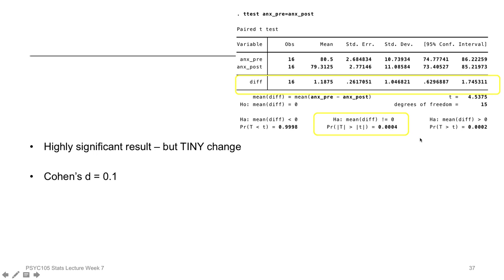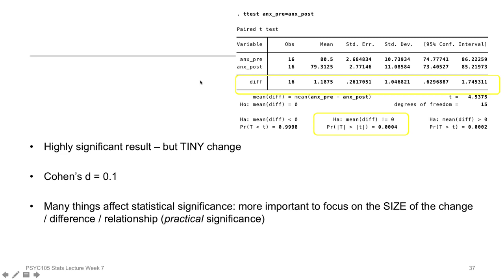If we only looked at the statistically significant result, we might get excited thinking this therapy is very useful — but it's actually not particularly useful because it has such a tiny effect on anxiety scores. There are many things, including sample size and variability, that affect the t-test and p-value. Just looking at significance gives a biased representation of the actual effect. What we really need to consider is the practical significance — the size of the change or difference.